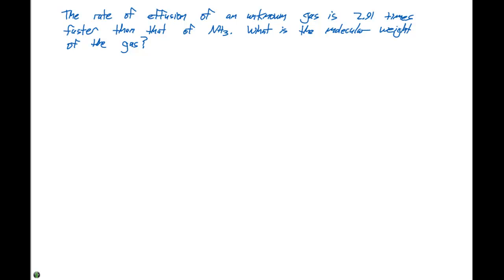We know that we can compare the rates of particular gases to their molar mass. So the rate of our unknown divided by the rate of NH3 equals the molar mass of NH3 divided by the molar mass of our unknown. This has to be raised to the 1/2 power. And given in this particular problem, this equals 2.91.